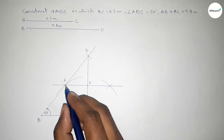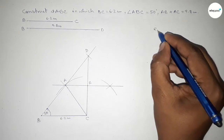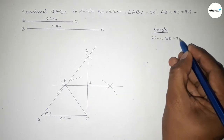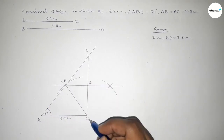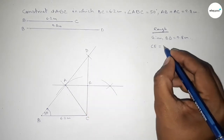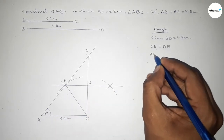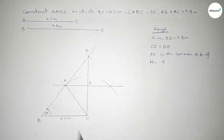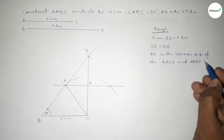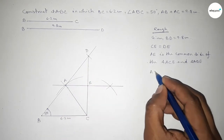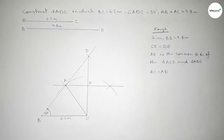Now let's discuss some important calculations. Given BD equals 9.8 centimeters, and this bisector bisects line CD into two equal parts, so length CE equals length DE. The line AE is the common side of the two triangles: triangle ACE and triangle ADE. By the perpendicular bisector theorem, AC equals AD.